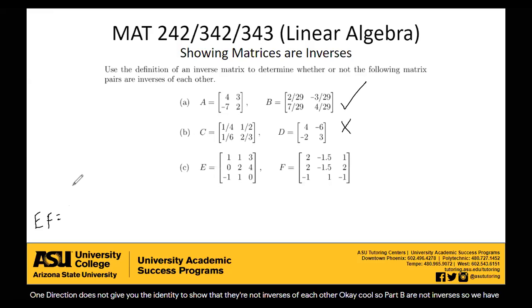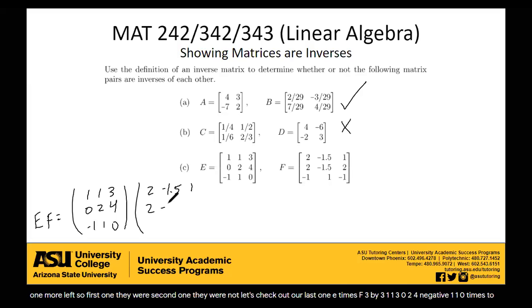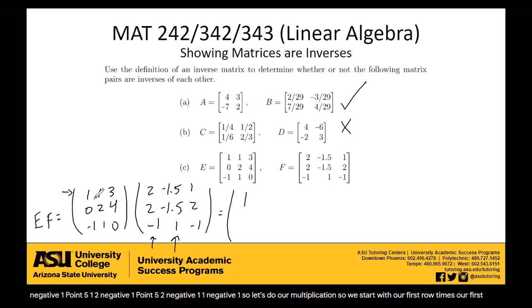E times F. We're doing three by three. 1, 1, 3, 0, 2, 4, negative 1, 1, 0, times 2, negative 1.5, 1, 2, negative 1.5, 2, negative 1, 1, negative 1. So let's do our multiplication. We start with our first row times our first column. So that's 1 times 2, plus 1 times 2, plus 3 times negative 1. So 2 plus 2 minus 3 gives us 1. Then we go to our next column. We have 1 times negative 1.5, 1 times negative 1.5, 3 times 1. So negative 1.5 minus 1.5 plus 3 is 0.